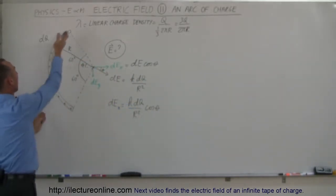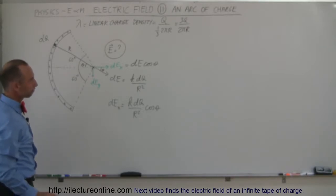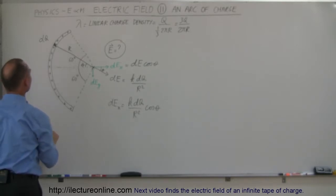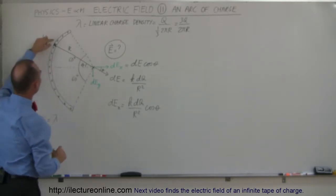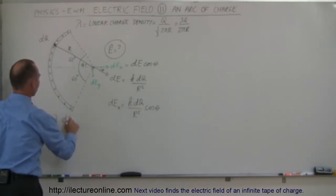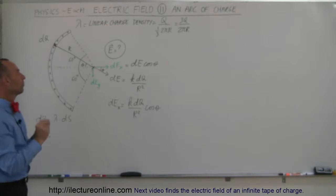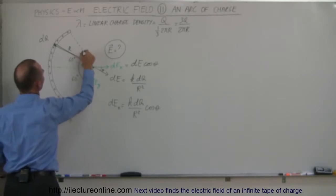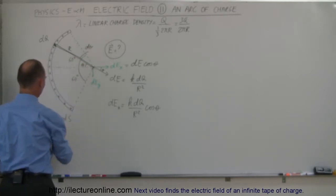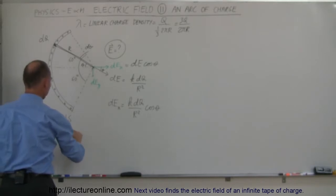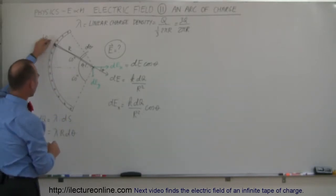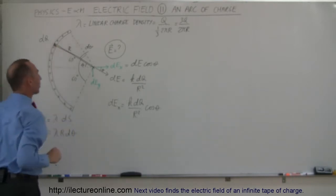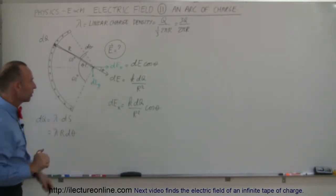To find DQ: DQ equals the linear charge density times the arc length DS. A small segment of arc length subtends a small angle D theta, so DS can be written as R·D theta. Therefore DQ on this little segment can be written as lambda times R·D theta, representing a small arc length DS.